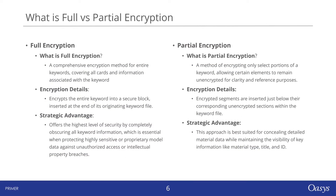We distinguish between full and partial encryption within OASIS Primer. Full encryption is a comprehensive method, encrypting every part of a keyword along with all its associated titles and material attributes. This creates a secure block at the end of the keyword file, providing the highest level of obscurity.